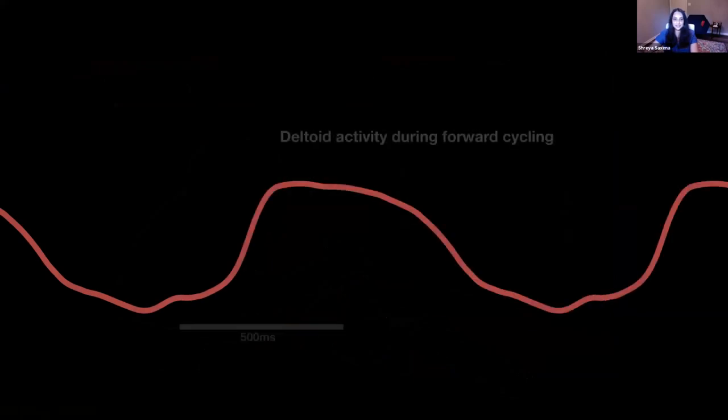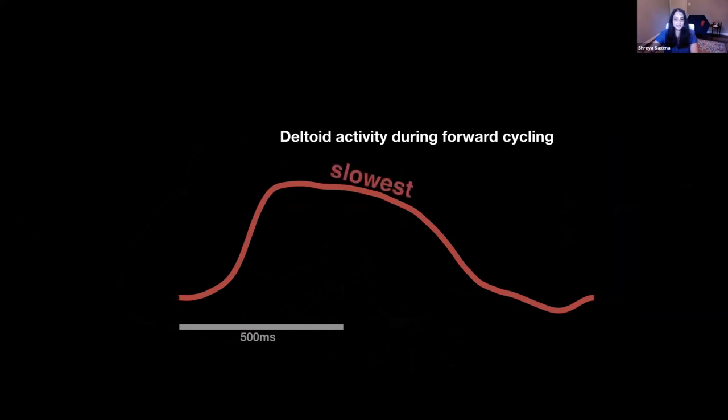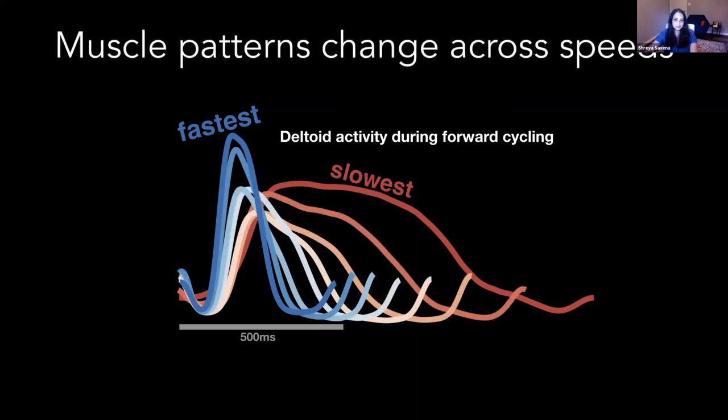OK, so we first take a look at the muscle activity. This is the activity of one of the muscles during forward cycling. This is a rhythmic movement. So we chop it up into cycles and this happens to be the slowest movement. And in fact, the fastest movement looks like this for this muscle. And as expected, the duration of the cycle is shorter, as you can see, but the pattern of activity changes as well. And similarly, we have all the other speeds in the middle. We bend the activity into eight different speeds. And we also have the activity of many other muscles here and just showing one of them. But there are many other muscles. And in fact, the biggest signals in the muscle activity, that is the top three principal components, look like this. And this, as you can see, is fairly tangled up. It's quite messy. But our question today is, how is this muscle activity generated?